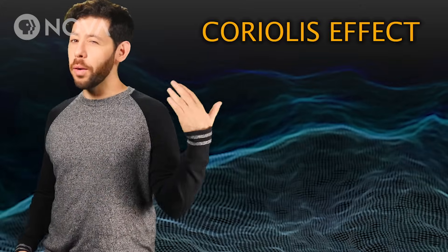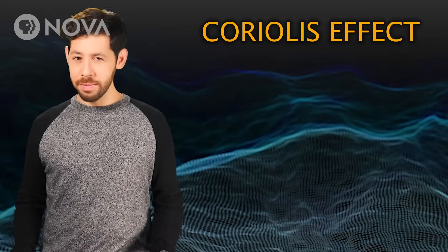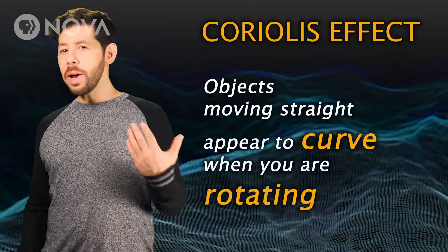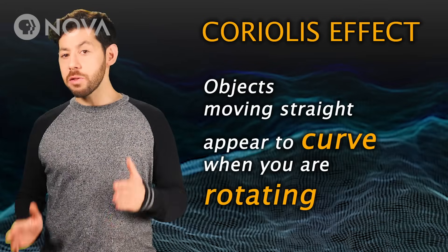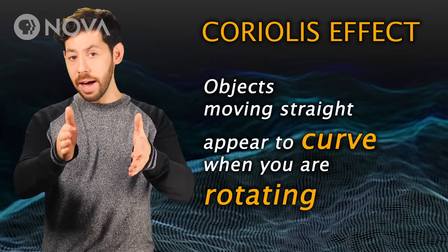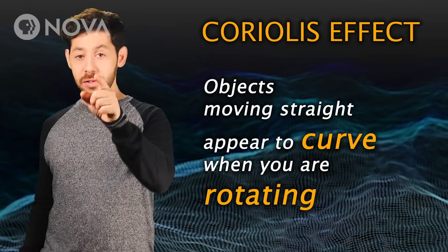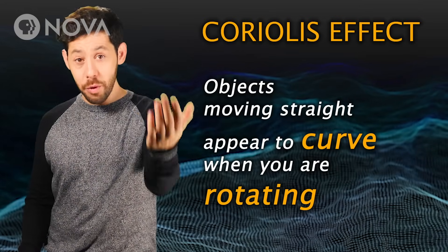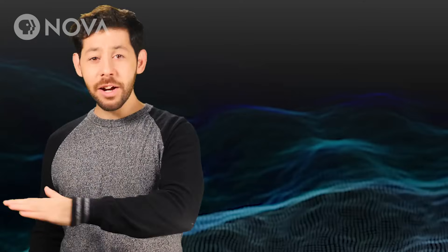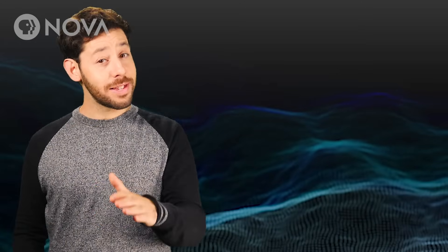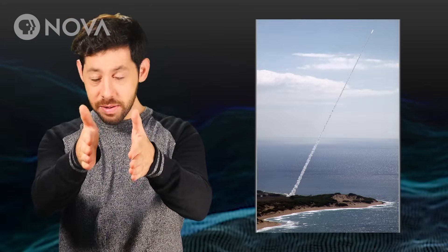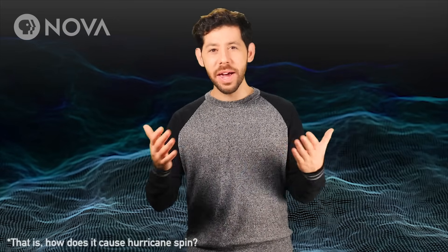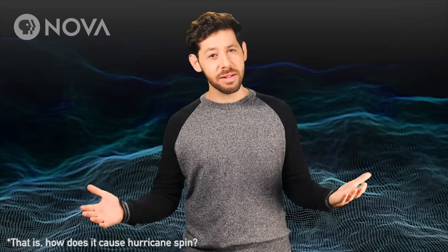So what is the Coriolis effect? It's what happens when objects moving in a straight line appear to curve because you are rotating, and it affects all kinds of things. It bends the paths of missiles and sniper shots. But how does it work, and how does it create hurricanes?